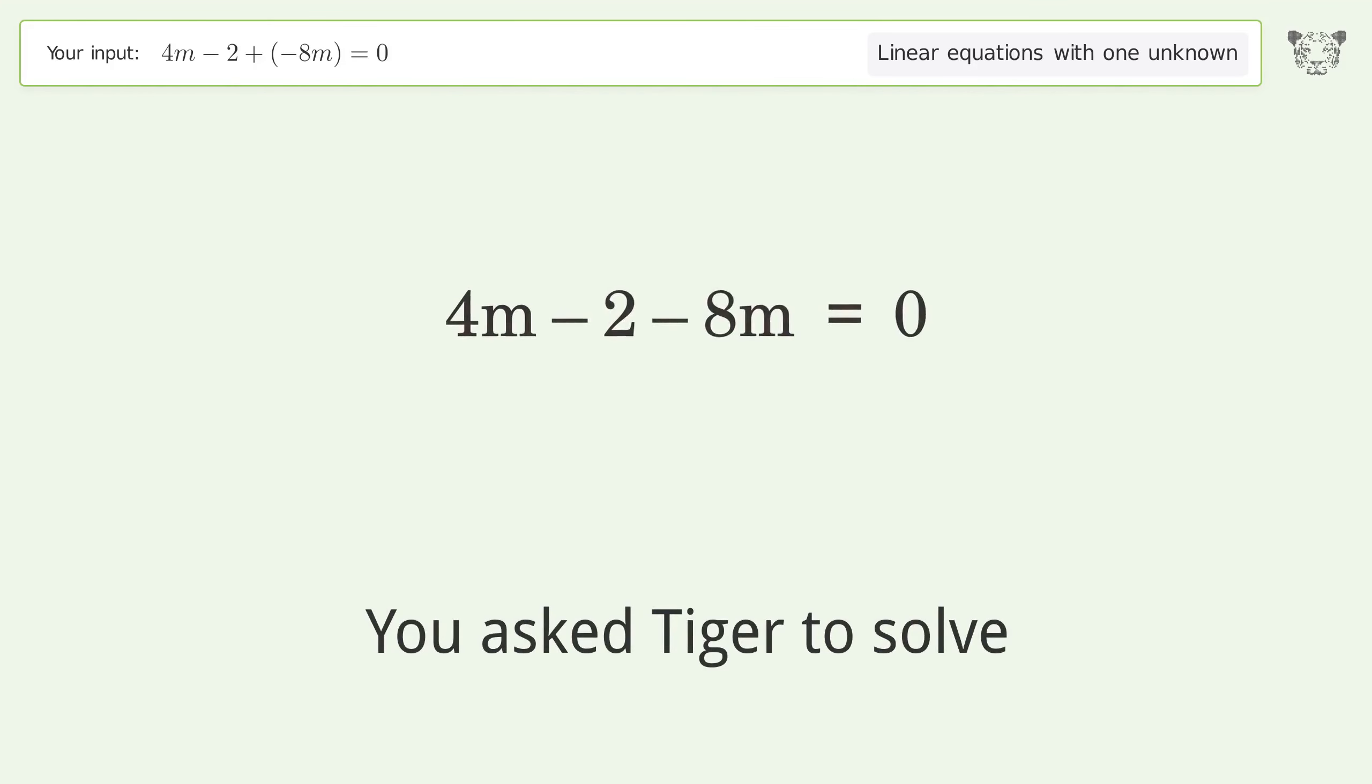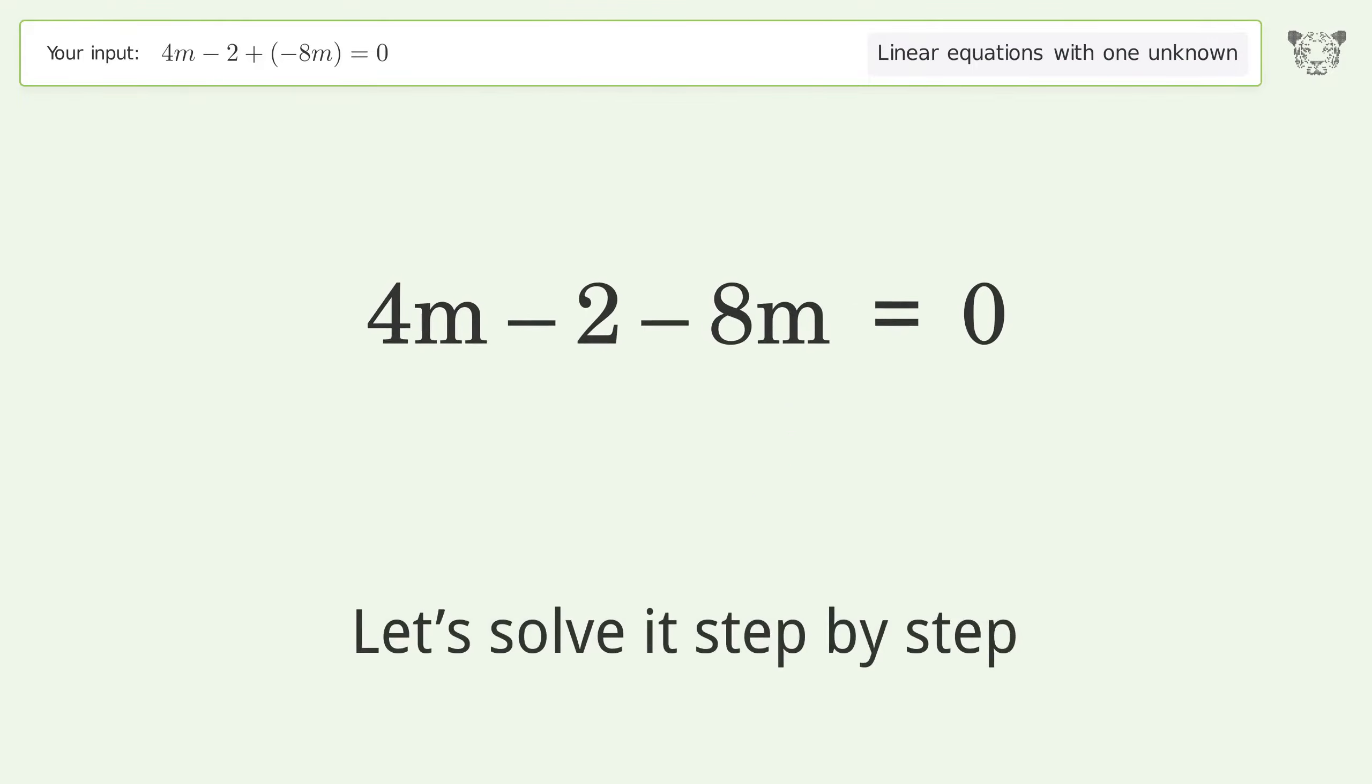You asked Tiger to solve this. This deals with linear equations with one unknown. The final result is m equals negative 1 over 2. Let's solve it step by step.